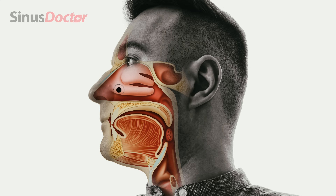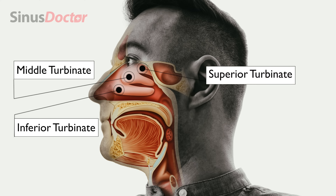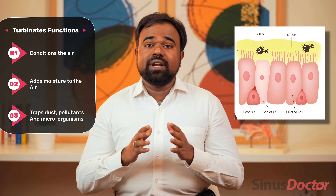So what are these turbinates or fleshy masses? These turbinates are very normally occurring structures in every human being. There are three types of turbinates: inferior turbinates, middle turbinates, and superior turbinates. These turbinates have three functions in breathing. First, they condition the air we breathe through the nose — they add warmth and moisture to the air. The turbinates also produce a thin slimy fluid called mucus, which traps dust particles, pollutants, and microorganisms like bacteria and viruses, and by trapping these microorganisms, it initiates the immune response.